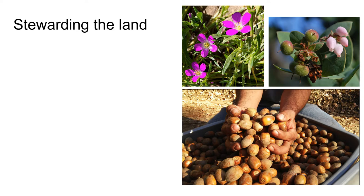Today, stewardship of open spaces and incorporating native plants in our cultivated ornamental landscapes is part of an intentional concern for nature and our natural ecosystems. But we need to remember that this isn't a new concept. Before being displaced from their lands by the Spanish missions in the 18th century, indigenous peoples had been present in California for at least 10,000 years and actively and sustainably tended the landscape to meet their needs using fire and a variety of agricultural or horticultural practices.